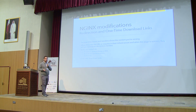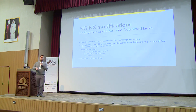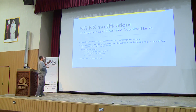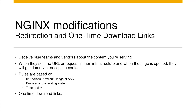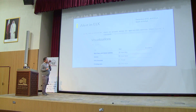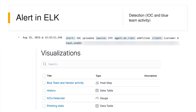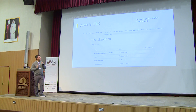We deceive blue teams for a very long time — any time a blue team tries to access your resource, they don't see the real content. We have an alert: somebody detected our IOC on OTX — showing the agent client and the hash file. We also have another visualization in ELK, which means I can track activity history: which IOCs have been detected and which phishing links have been clicked on.